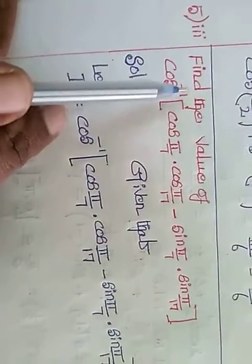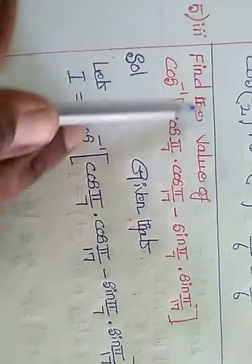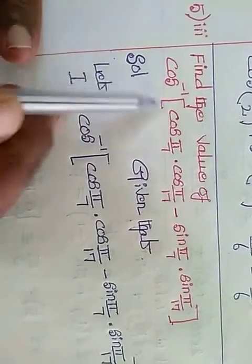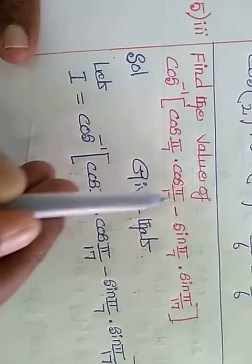According to class 11 plus 1 students, now we are going to see the sum exercise 4.2, fifth to third subsection. Find the value of cos inverse of cos pi by 7 into cos pi by 17 minus sine pi by 7 into sine pi by 17.